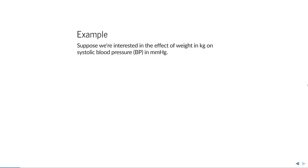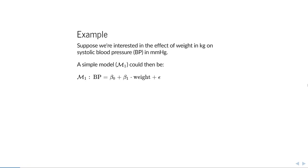As a short example, suppose you're interested in the effect of weight on blood pressure, and you measure systolic blood pressure and weight in kilograms. A very simple model, M1, could be: blood pressure equals some base level plus some slope times weight in kilograms, plus a random deviation epsilon. But you could also include other variables — maybe you think taller individuals have a different blood pressure.